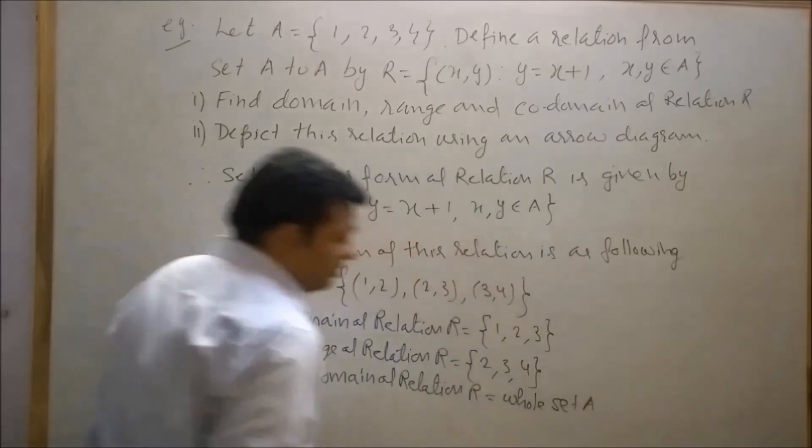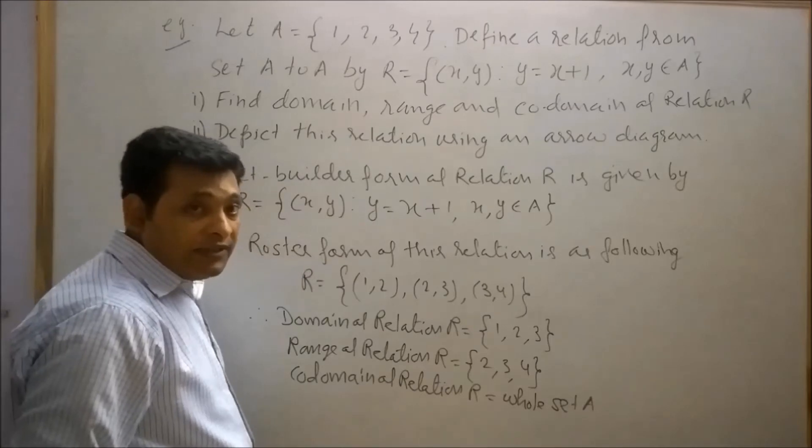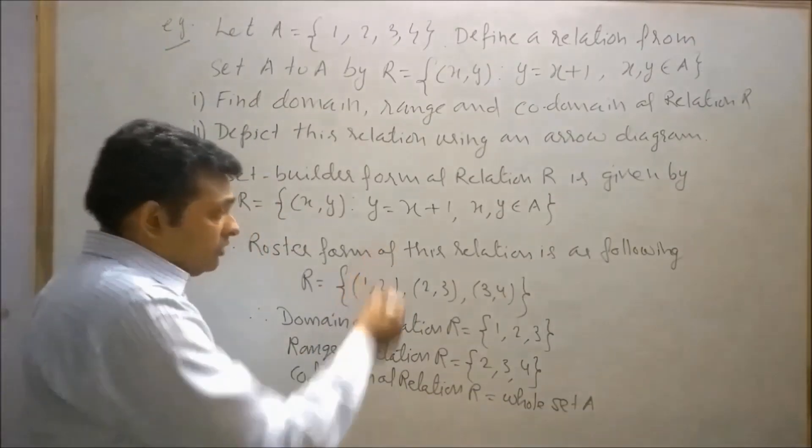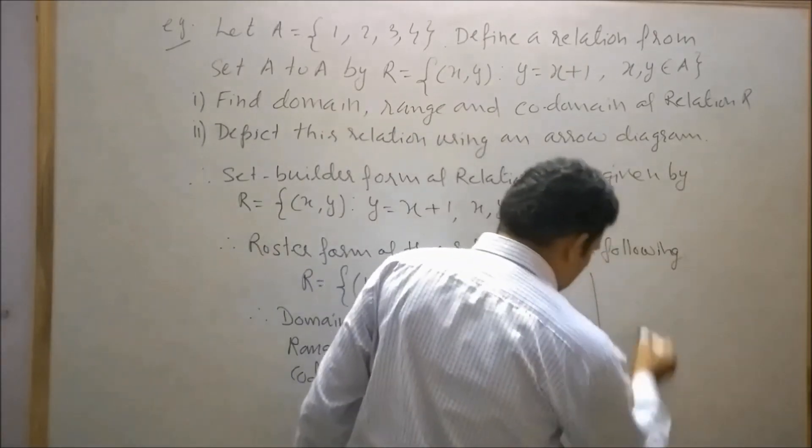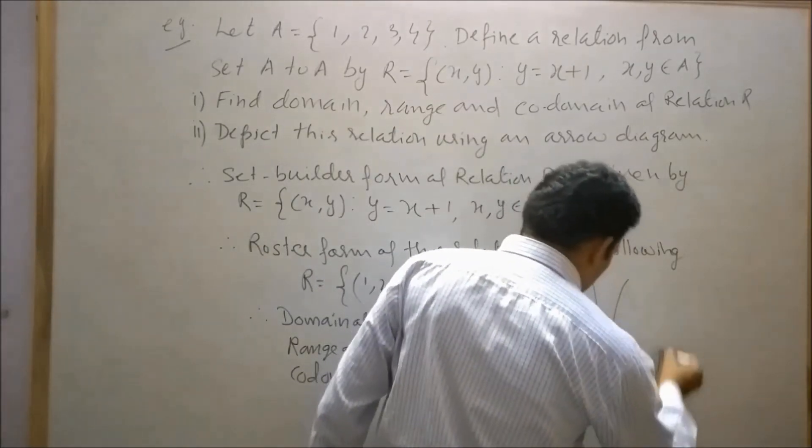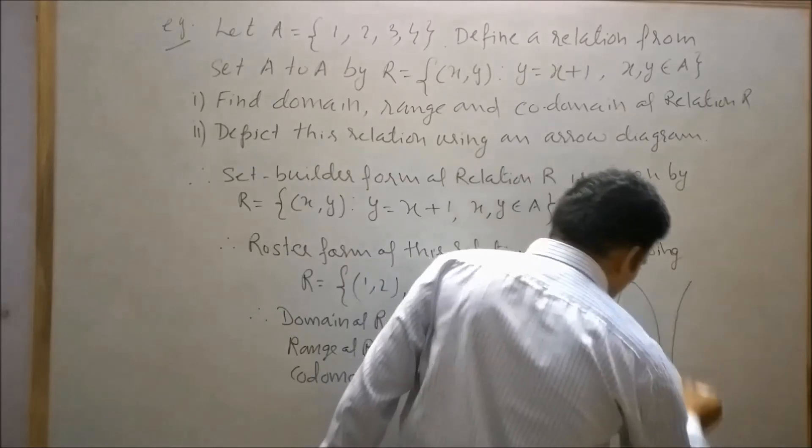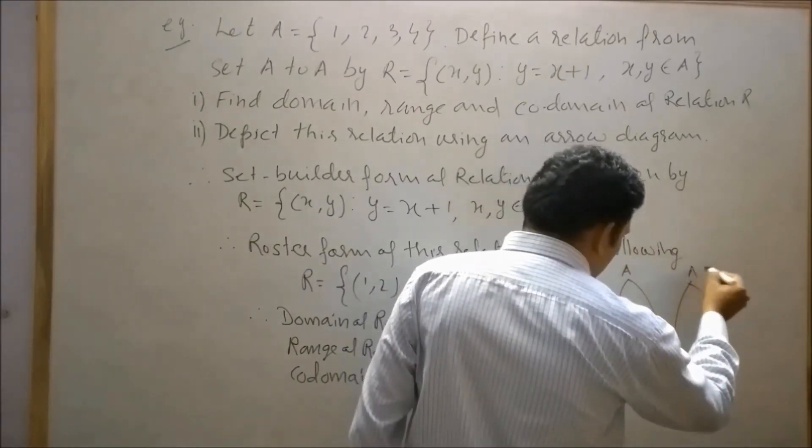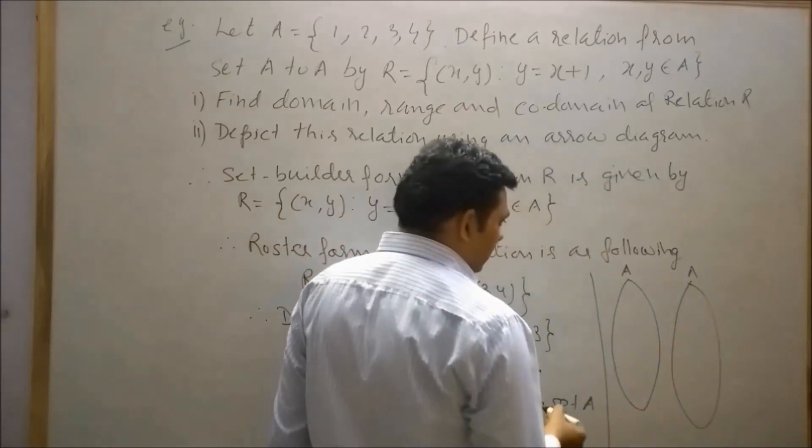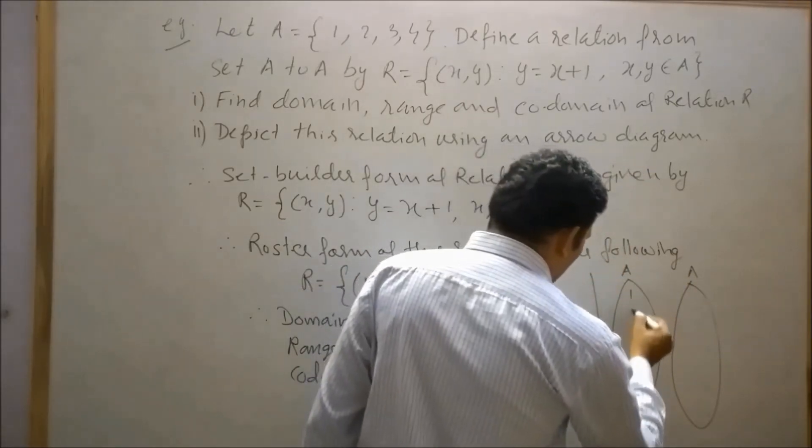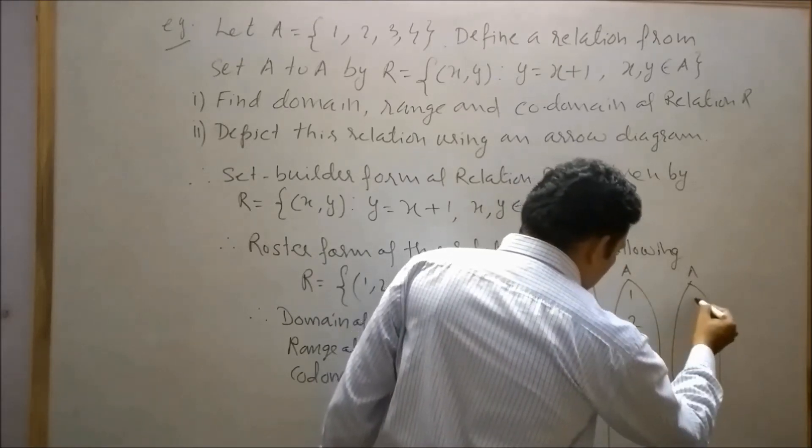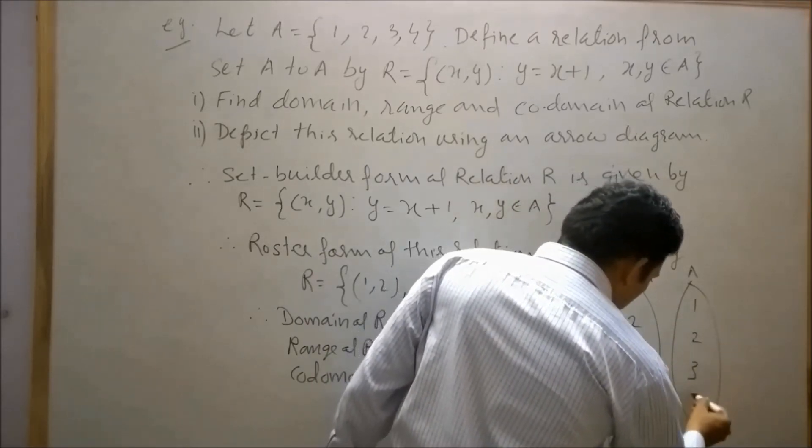Since the relation is defined on set A, the arrow diagram of this relation is as follows: this is set A, this is also set A. Set A contains 1, 2, 3, 4 in both sets.